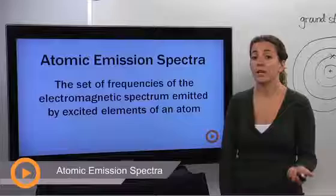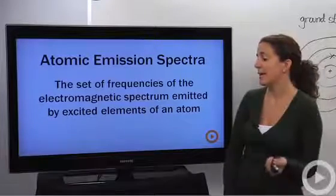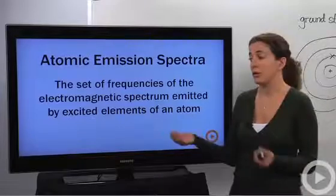Alright, so we're going to talk about the atomic emission spectra. It's a set of frequencies of the electromagnetic spectrum emitted by excited elements of an atom. So the first question is electromagnetic spectrum. Let's take a look at that.